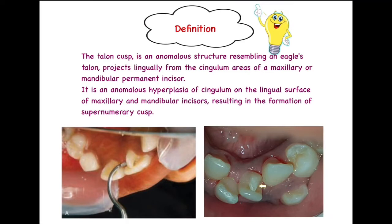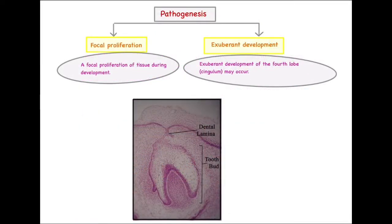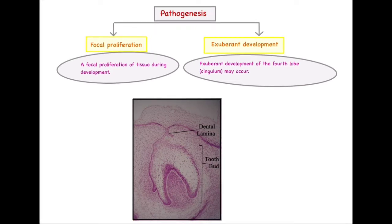Moving on towards the pathogenesis, two major causes are implicated. The first is focal proliferation — in a localized area there will be excessive proliferation as well as differentiation of tissues leading to this anomaly. It is nothing but hyperplasia of cells particularly in the cingulum area, so focal hyperactivity of cells may give rise to Talon's Cusp. The second cause mentioned in various texts is exuberant development.